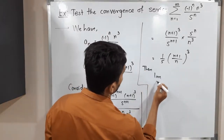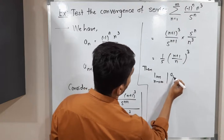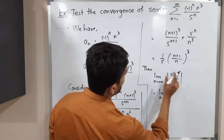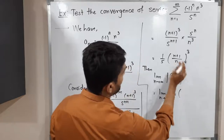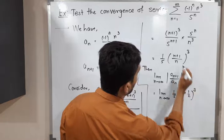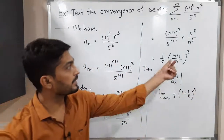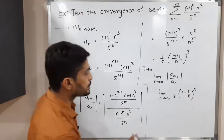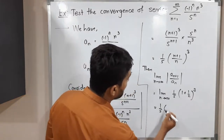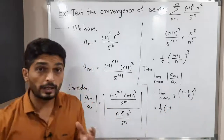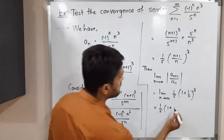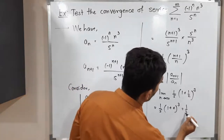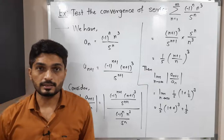Let us now apply the limit. We need lim as n→∞ of |a_(n+1)/a_n|. Its value is (1/5) · (1 + 1/n)³. The 1/5 is a constant and comes outside. As n→∞, 1/n → 0, so we get (1/5) · (1 + 0)³ = (1/5) · 1 = 1/5.